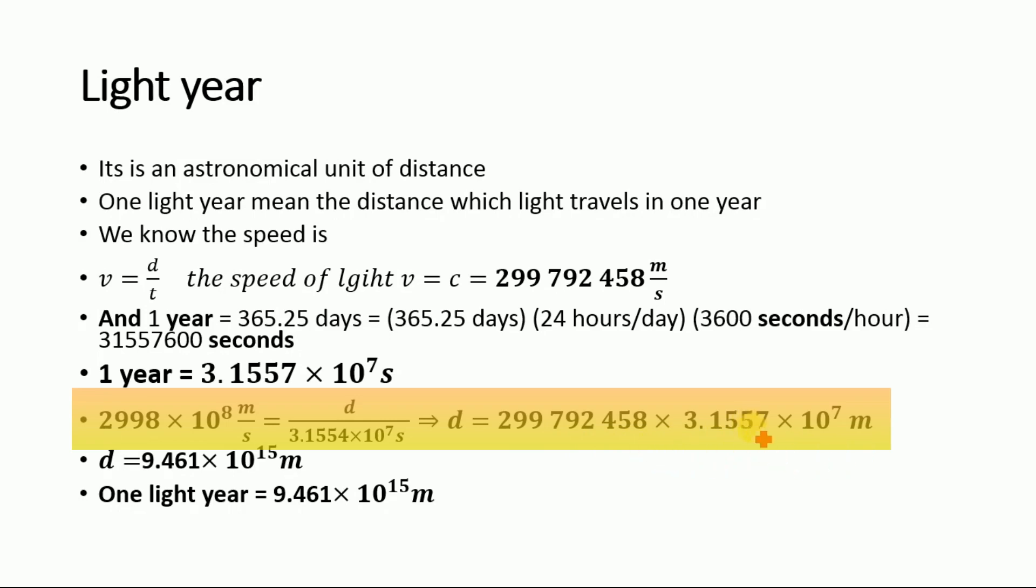Multiplying these two terms, we will get d is equal to 9.461 multiplied by 10 to the power 15 meters. So one light year is equal to 9.461 multiplied by 10 to the power 15 meters, and it is the unit of distance.